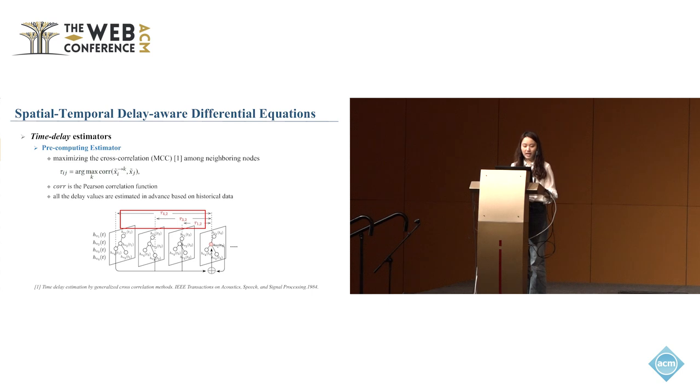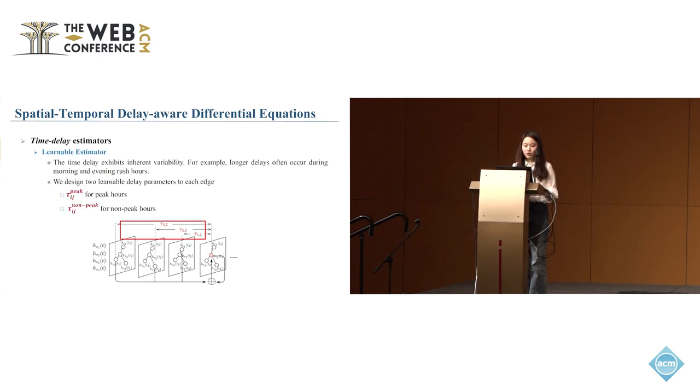We first introduce our time delay estimators. In this paper, we propose two estimators. The first is a pre-computing estimator that maximizes the cross-correlation among neighbor nodes, where all delay values are estimated in advance based on historical data. Then we propose a second learnable estimator. The time delay exhibits inherent variability. For example, longer delays often occur during morning and evening rush hours. So we designed two learnable delay parameters to each edge: tau_ij peak for peak hours and tau_ij non-peak for non-peak hours.